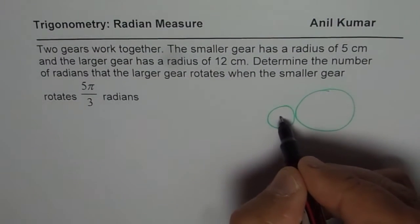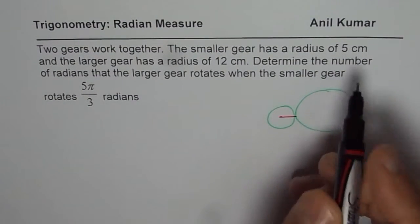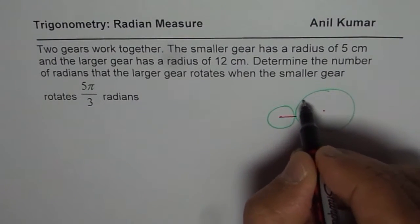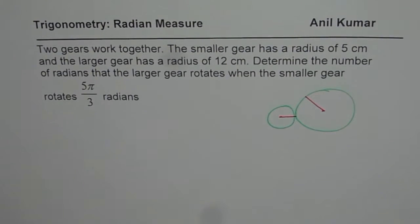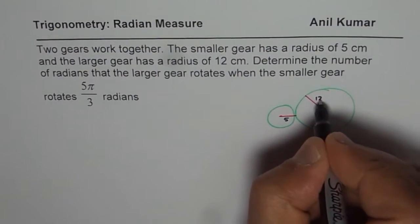Now, it is given to us that the smaller gear, which is of radius 5, and the bigger gear is of radius 12. So that is the radius given to us. We will write 5 for the small one and 12 for the big one.